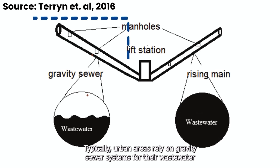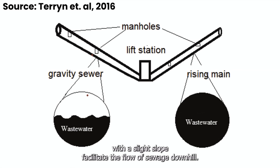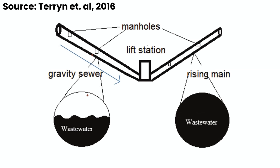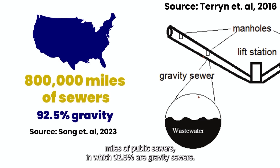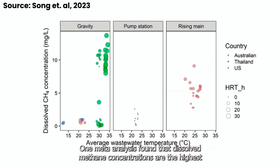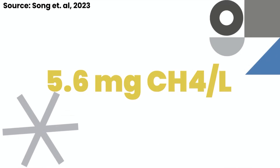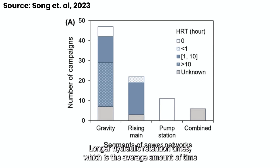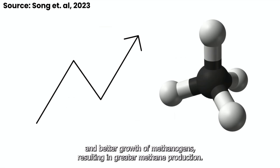Typically, urban areas rely on gravity sewer systems for their wastewater management, where underground pipes with a slight slope facilitate the flow of sewage downhill. The U.S., for example, has a network of over 800,000 miles of public sewers, in which 92.5% are gravity sewers. One meta-analysis found that dissolved methane concentrations are the highest in gravity systems, with 5.6 milligrams of methane per liter of wastewater. Longer hydraulic retention times — the average amount of time that wastewater remains in the sewer — leads to more anaerobic conditions and better growth of methanogens, resulting in greater methane production.